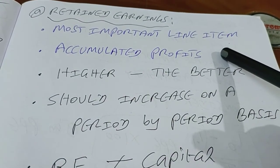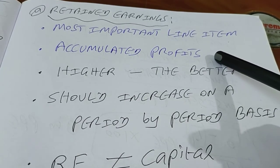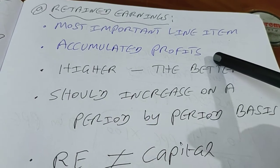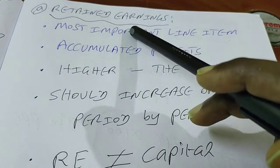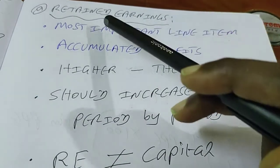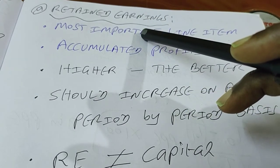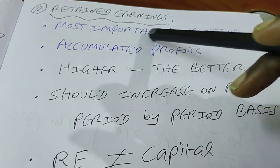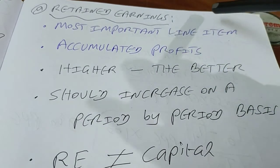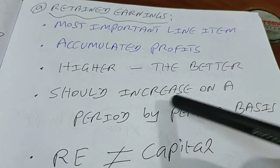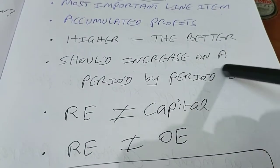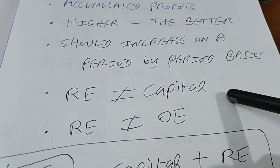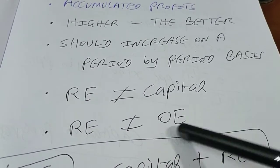The very first and single most important line item in the balance sheet is retained earnings. It gives you the accumulated profits of the entity. Retained earnings means the profit retained by the firm after paying dividends to shareholders — or drawings in the case of sole tradership and partnership. So higher the number, better is the performance of the firm, and it should increase on a periodic basis.